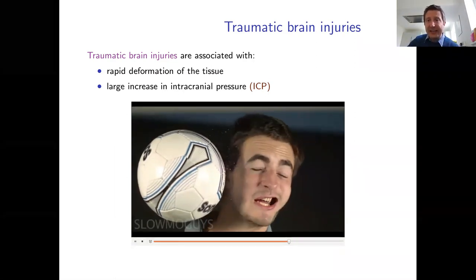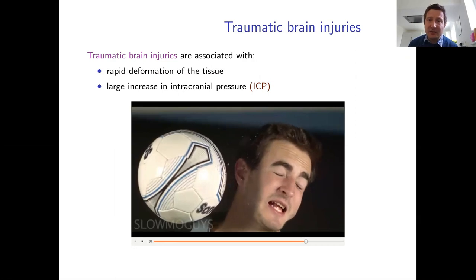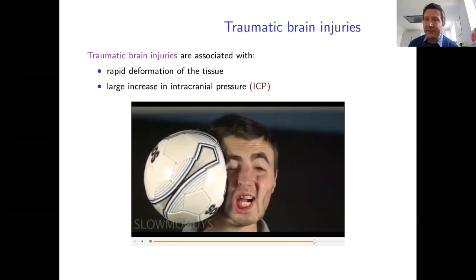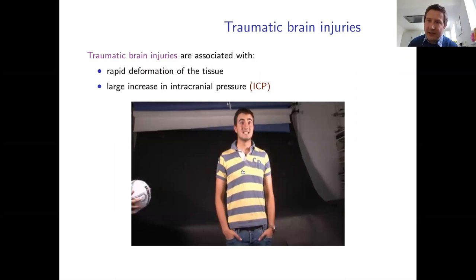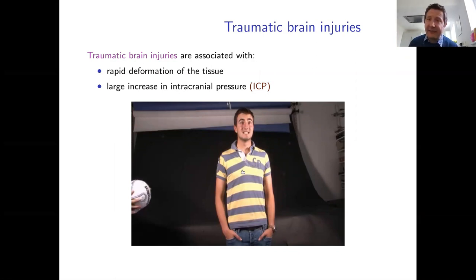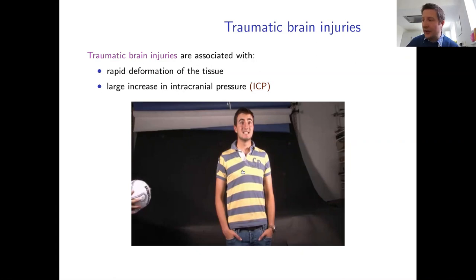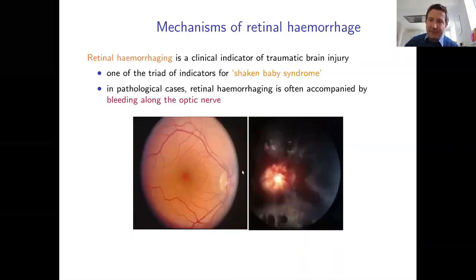The pressure increase from such an impact is transient — it rises and then comes back down. Intracranial pressure is normally about 10 to 12 mmHg, but an impact might raise it transiently to 50, 60, or 70 mmHg, with little long-term effect. However, if the pressure rise were much greater or sustained over longer periods, things become dangerous, especially if intracranial pressure approached arterial levels.